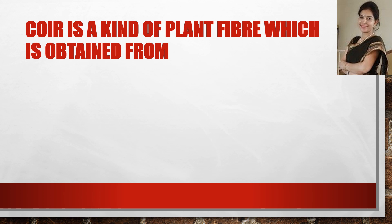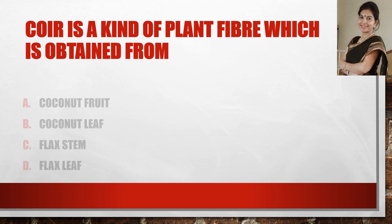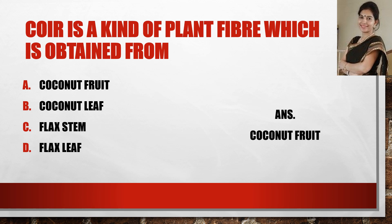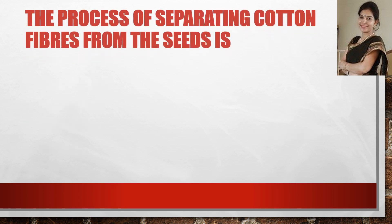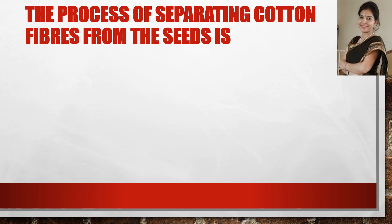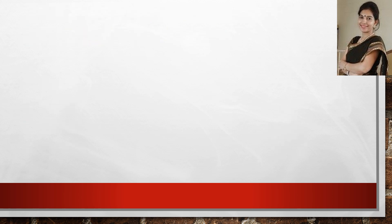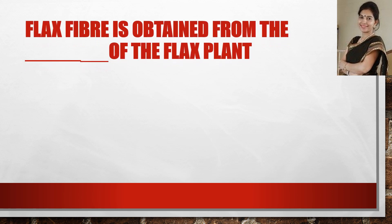Now the next question: coir is a kind of plant fiber which is obtained from — and the answer is coconut fruit. Now the next question: the process of separating cotton fibers from the seed is called — and the answer is ginning.